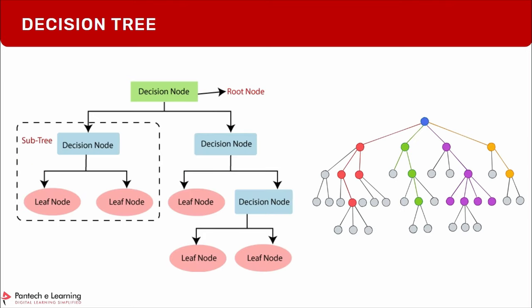A decision tree has a root node (parent node) where it starts, decision nodes where splits occur, and leaf nodes which have no further branches. From the root, a decision is made, the data is split, another factor is considered, and it splits again. Decision nodes continue to the next decision; if no further decision is needed, you reach a leaf node.